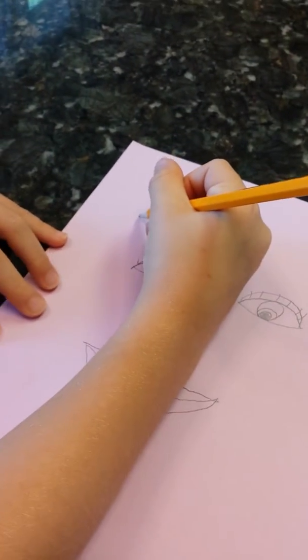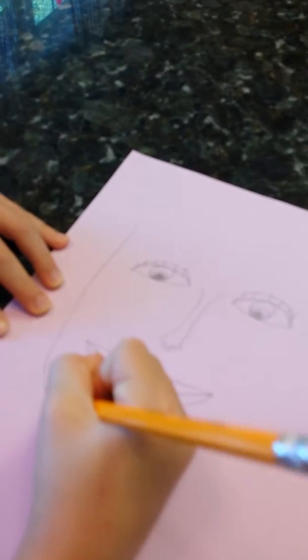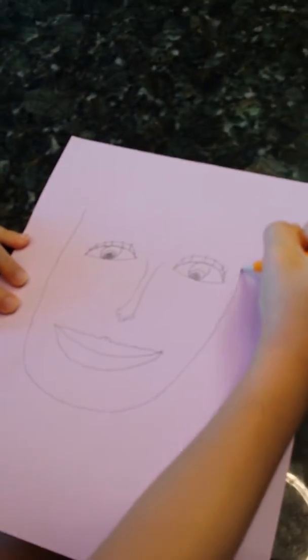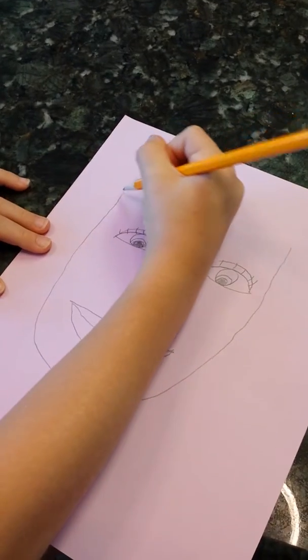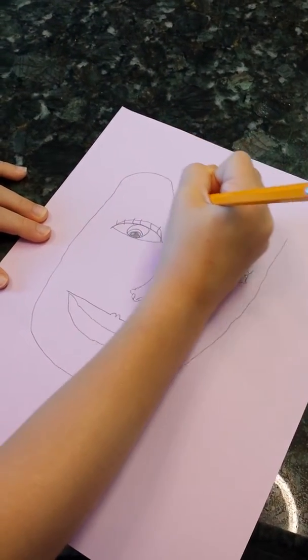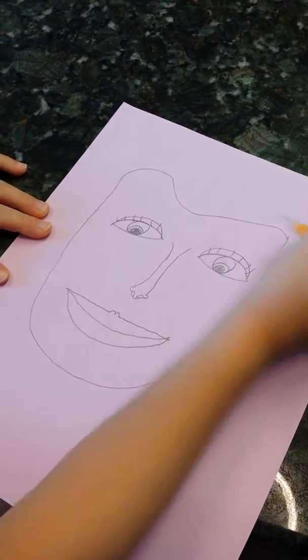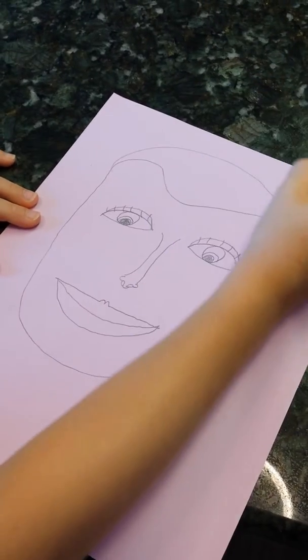And then we're going to do the face. Like a little circle around everything else. And then do the hairline. Any hairline you want, but I'm going to do mine like that. And then add the hair.